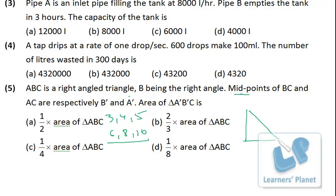Now I just draw the triangle. Here B is the right angle, I assume A and C. This is 6, 8, and 10. Now midpoint of BC is this, and AC is this. So I have to find out, this is B' and A'.